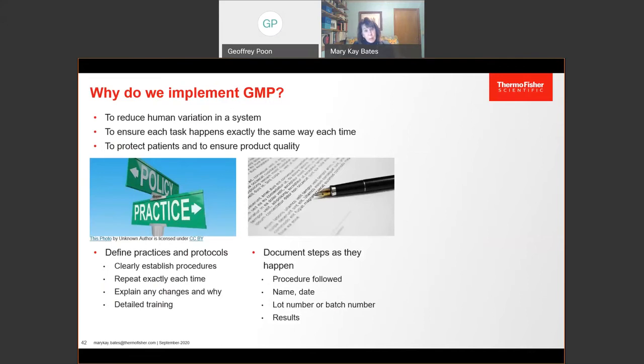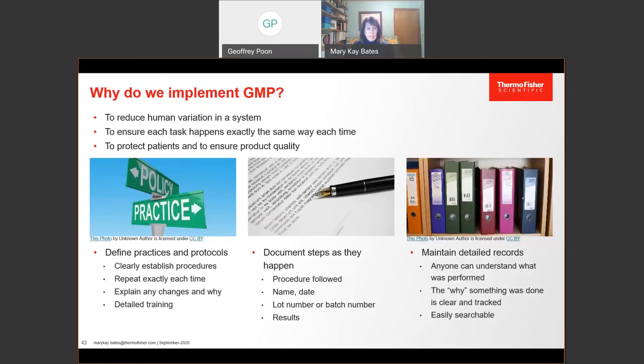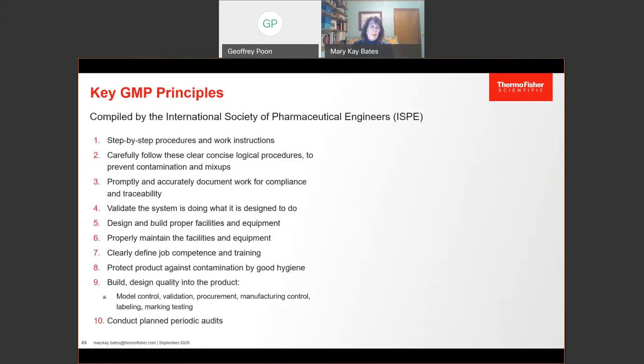Another part of GMP is to document all the steps as they happen. This is a very important part of GMP. It's not like in an academic lab where you can make a note on a paper towel and transfer that to your laboratory notebook later. In GMP, the exact procedure must be followed and noted, including the name of the person performing the task, the date, the lot number, and the results. These are simply minimum requirements. Finally, GMP is about maintaining details. The goal is that anyone can look at these records and understand easily exactly what happened and how. But it's also about why something was done. Everything has a reason and such reasons must be reported.